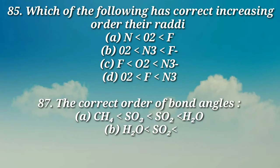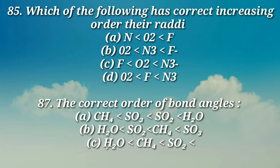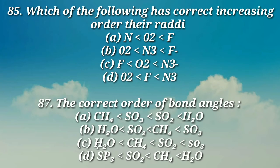Question number 87: The correct order of bond angles: (a) CH4, SO3, SO2, H2O, (b) H2O, SO2, CH4, SO3, (c) H2O < CH4, SO2 < SO3, (d) SO3, SO2, CH4, H2O.